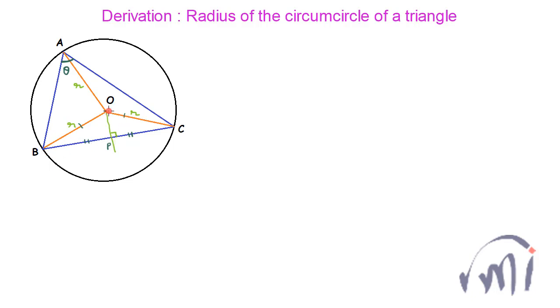And since angle BOCP is equal to 2 theta, that means each of these angles will be equal to theta. As you know, the side opposite to vertex A is taken as small a.